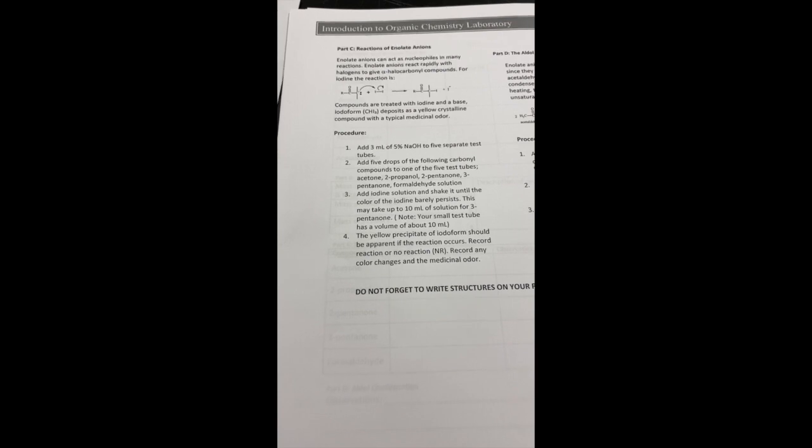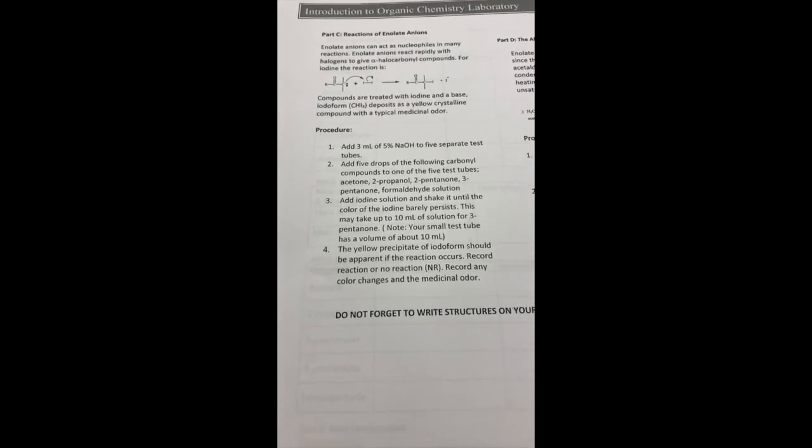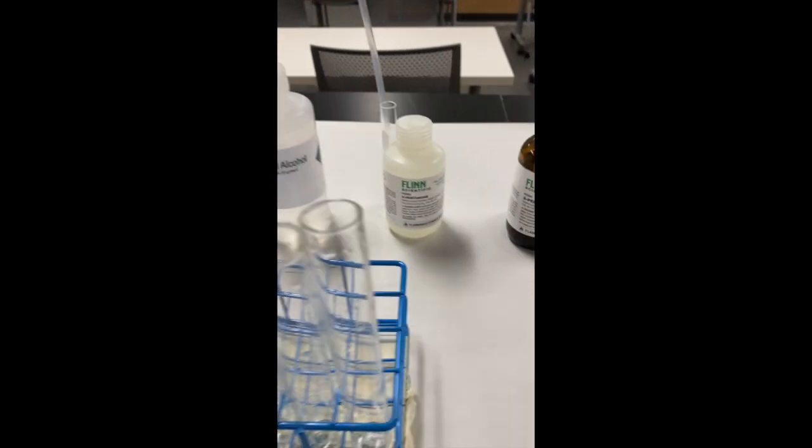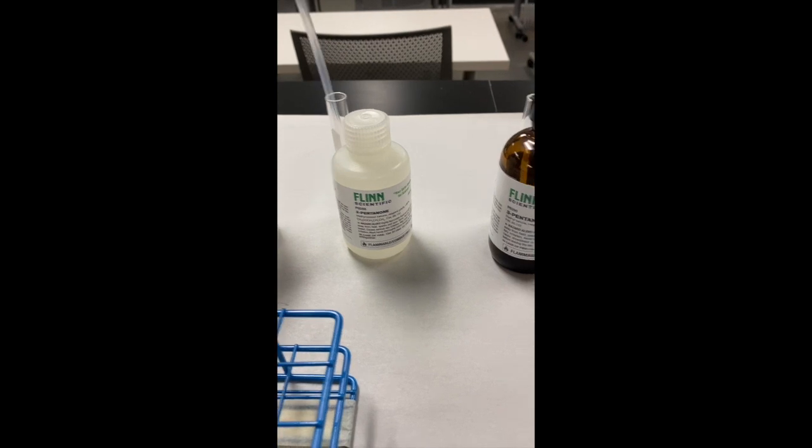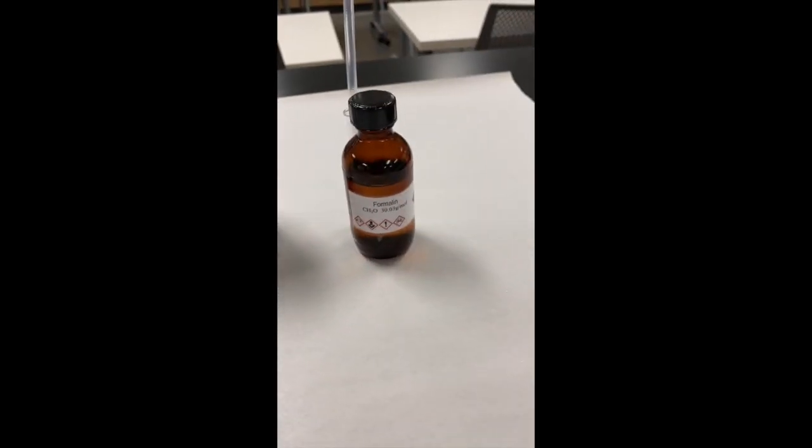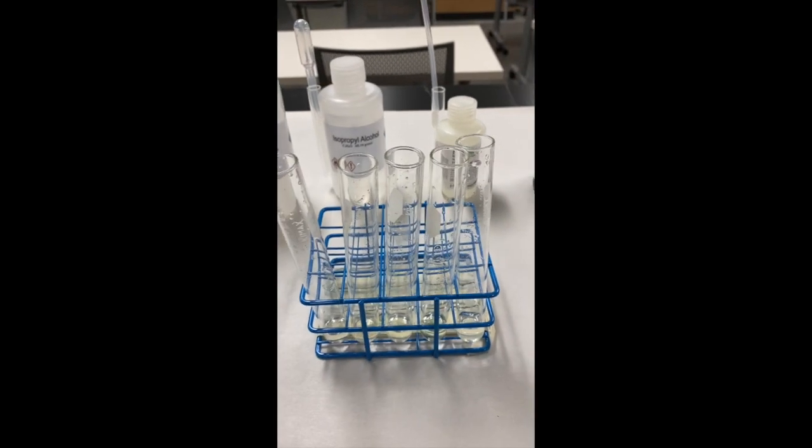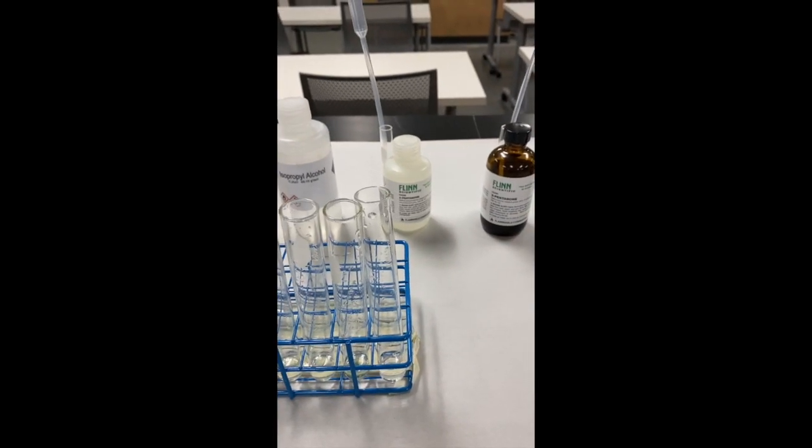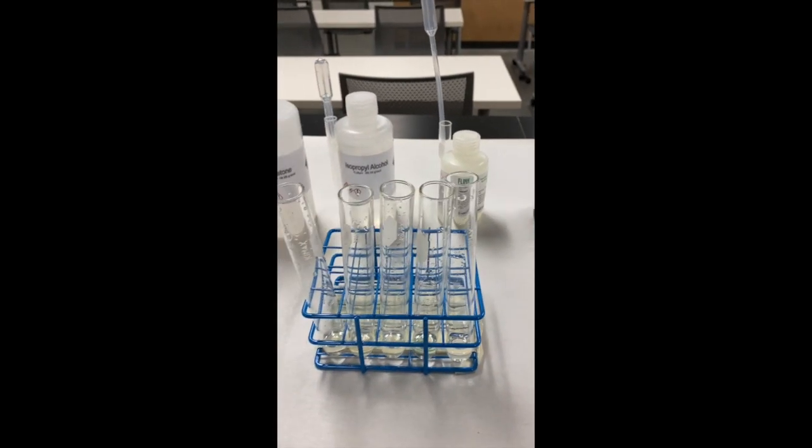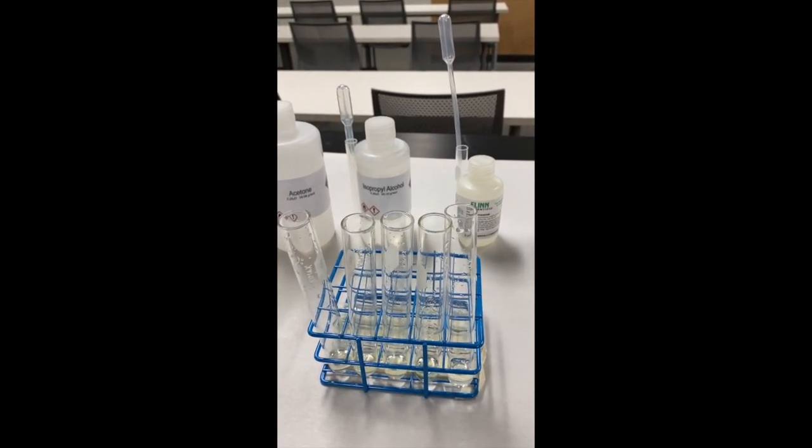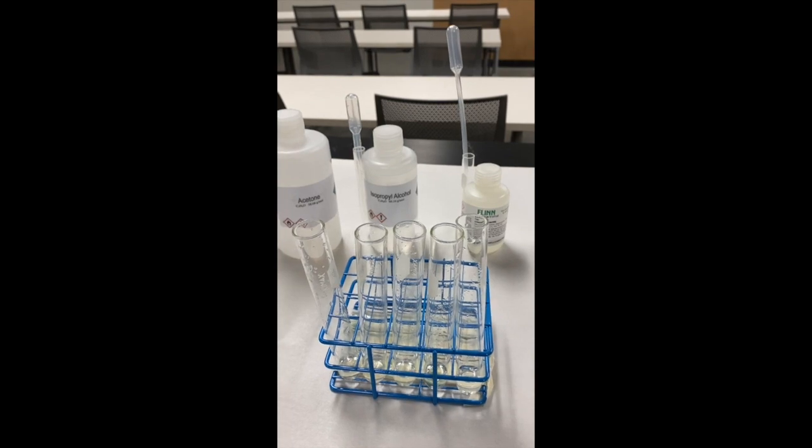So we're looking at the reactions of enolate ions. And we are going to use acetone, 2-propanone, also known as isopropyl alcohol, 2-pentanone, 3-pentanone, and formaldehyde in the form of formalin. I've already added the first part, which was the three milliliters, so the five percent sodium hydroxide. I'll be adding the drops of each of these. And then I'm going to go ahead and add the iodine.